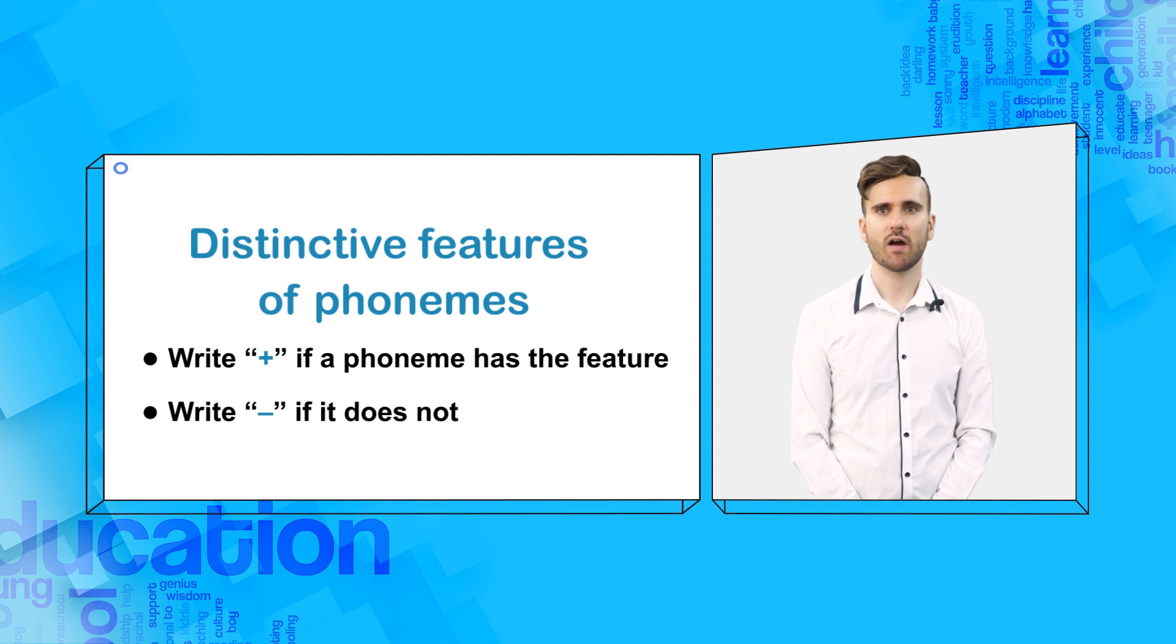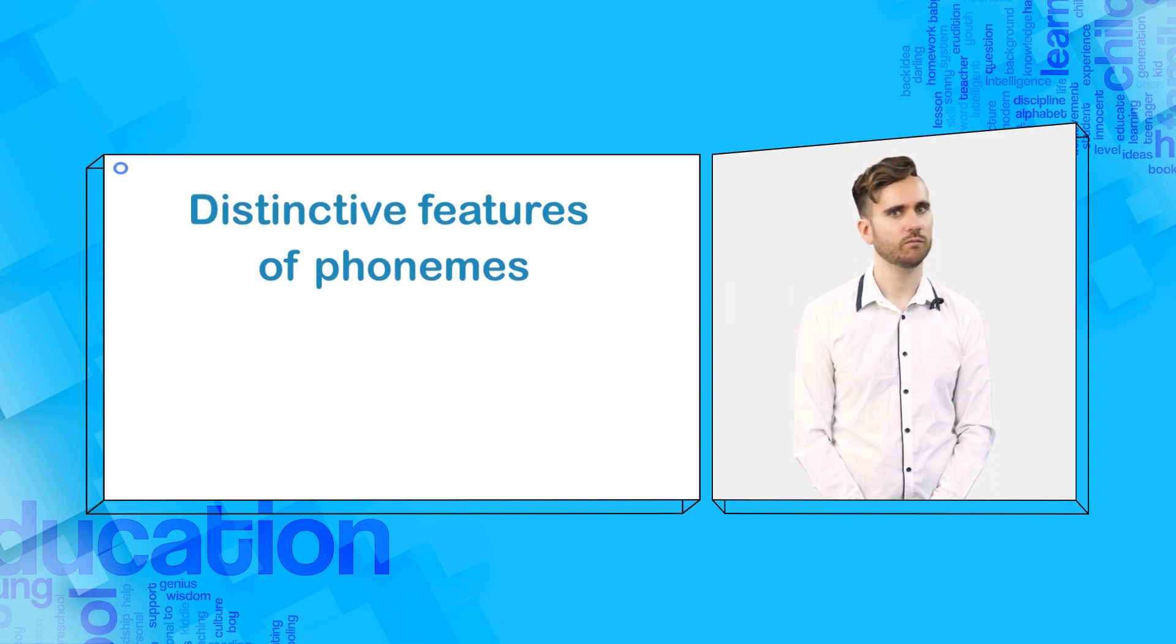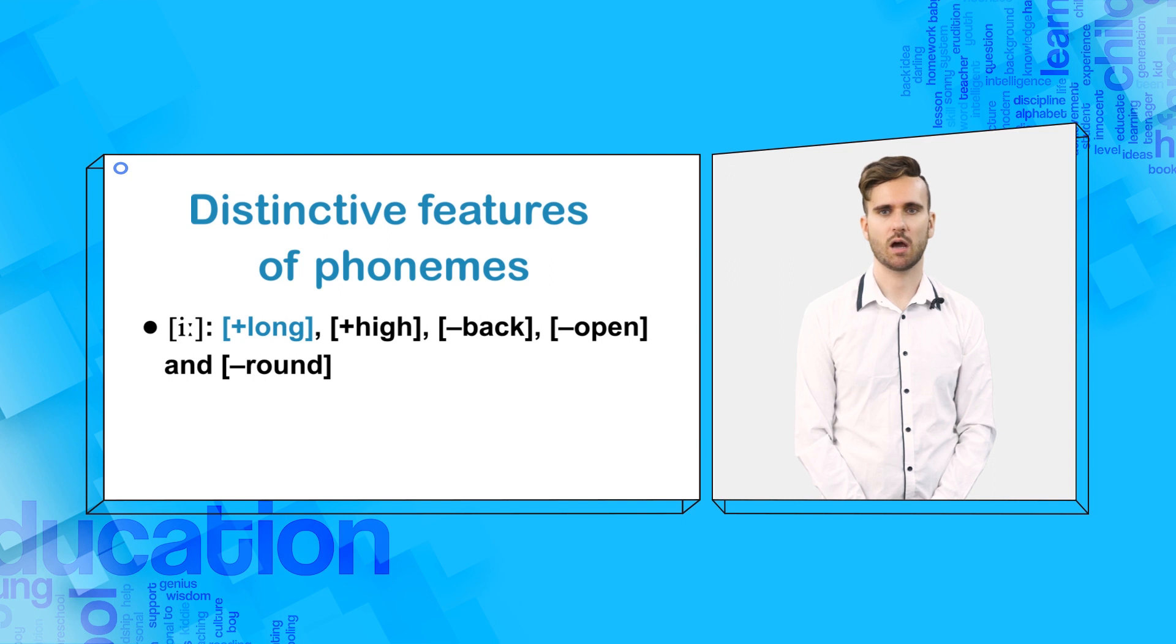Regarding vowels, there are five distinct features, which we described in detail in the previous unit. For example, E is plus long, plus high, minus back, minus open, and minus round.